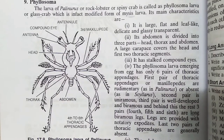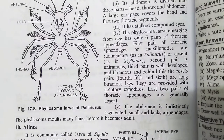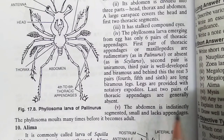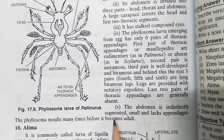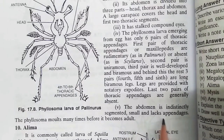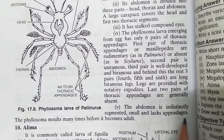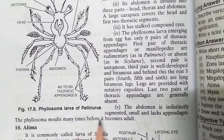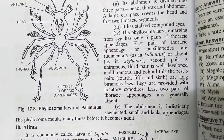The abdomen is indistinctly segmented, small, and there are no appendages on it. Phylosoma molts many times before it becomes an adult — it undergoes a lot of molting before reaching the adult stage.